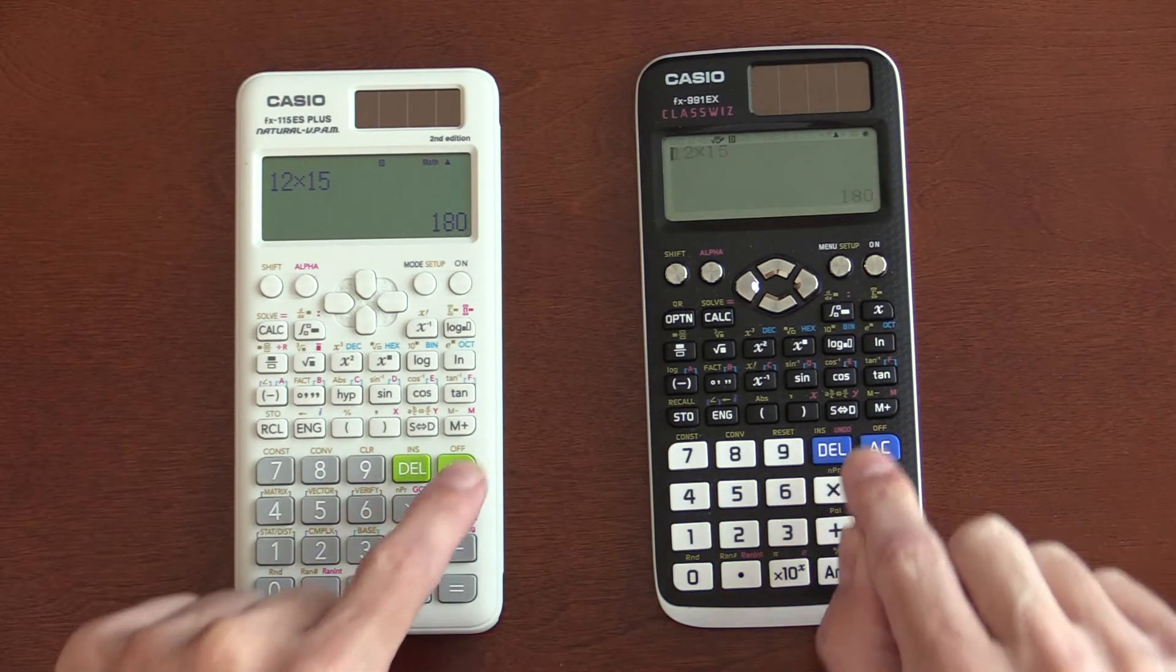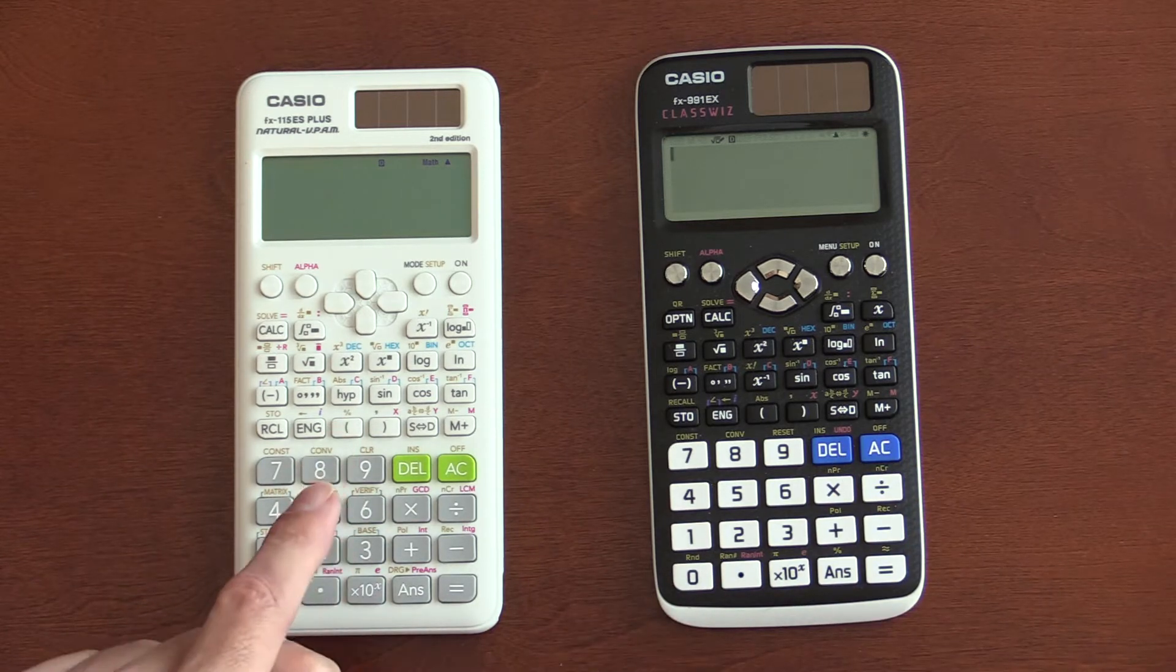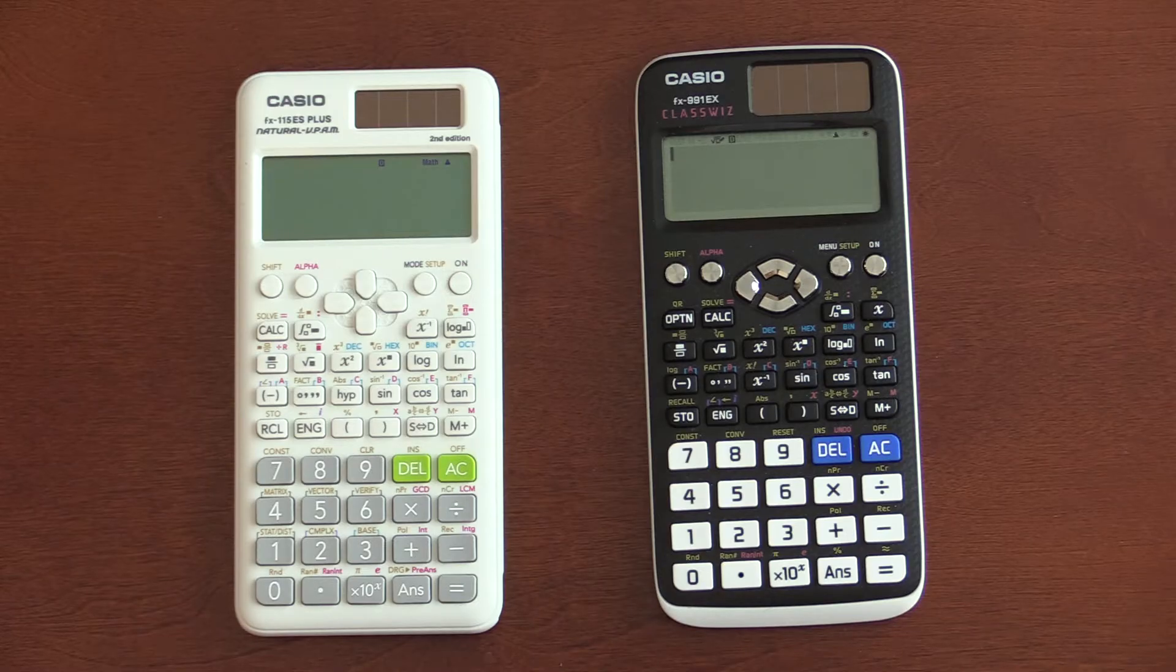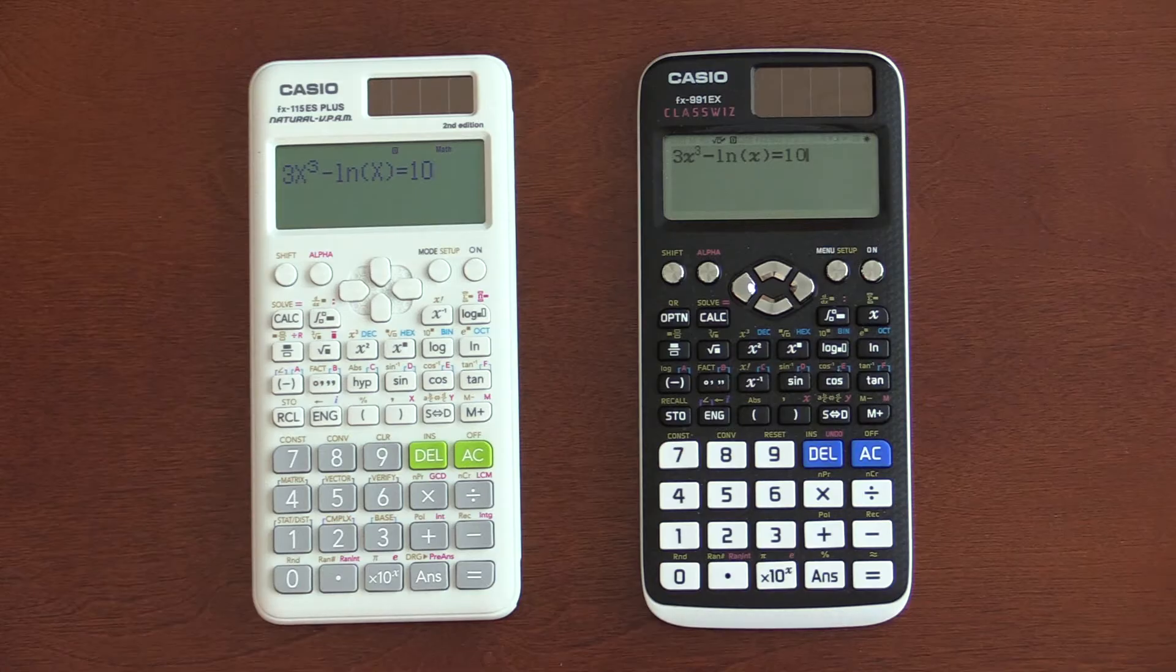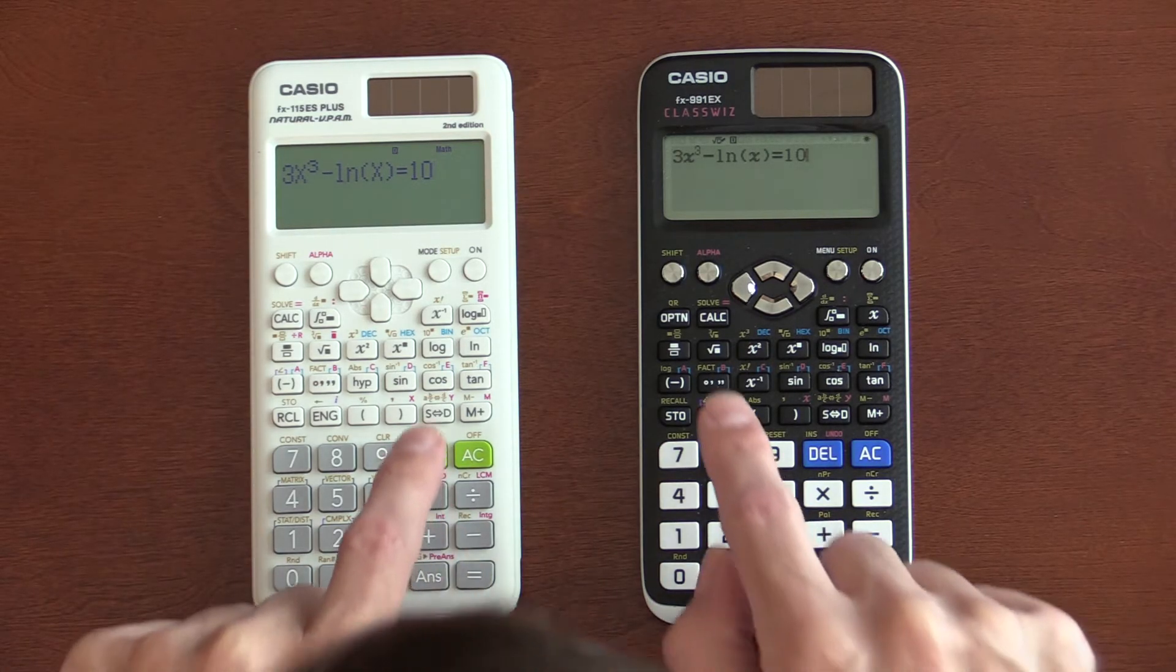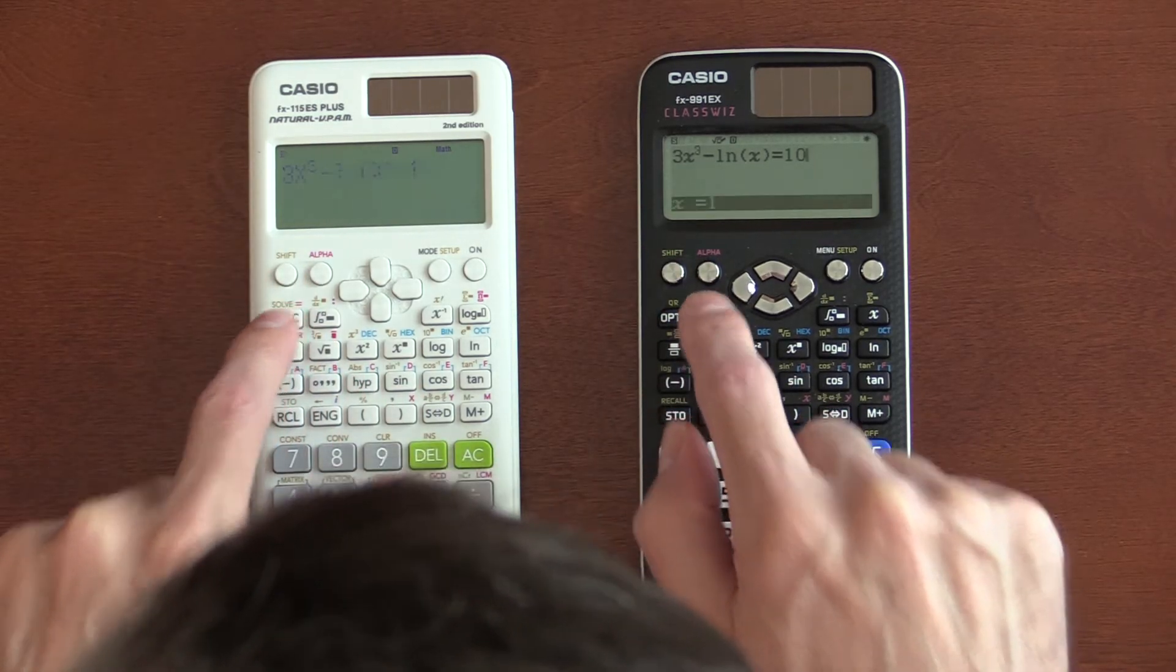The processor in the EX is way quicker than in the ES. In fact, the ES is the exact same in the second edition as it was in the first edition. I ran a couple benchmarks. Let's start with this equation, and we will solve each of these.